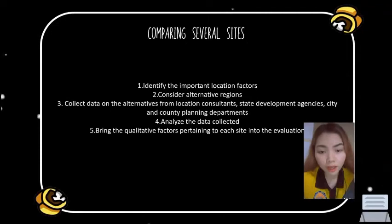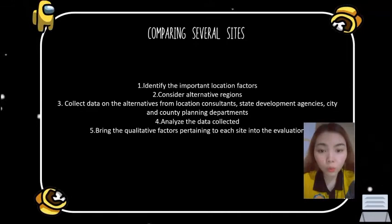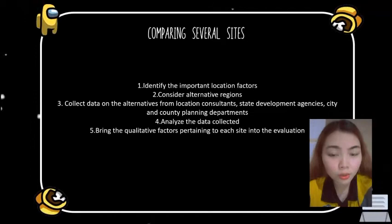Community factors consist of quality of life, services, attitudes, taxes, environmental regulation, utilities, and development support. The main considerations of choosing a site are land, transportation, zoning, and many others. When identifying a site, it is important to consider whether the company plans on growing at this location; if so, the firm must consider whether the location is suitable for expansion.